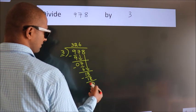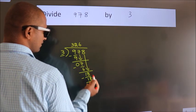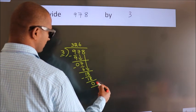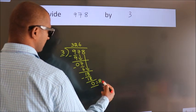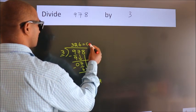After this, no more numbers to bring down. So we stop here. This is our remainder. This is our quotient.